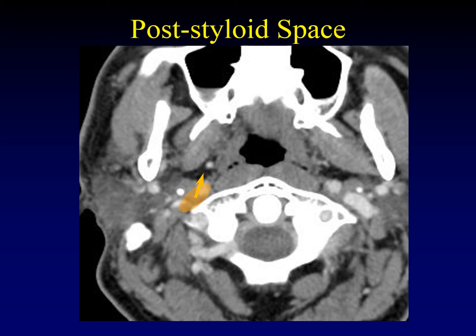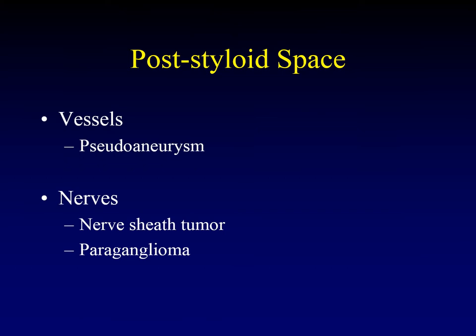Let's move on and talk about the post-styloid parapharyngeal space. Masses that arise here should displace the parapharyngeal fat anteriorly and a little bit medially. Some people prefer to call this the carotid space; I like the more descriptive term post-styloid space because it tells me where to look for it. Our differential includes things that arise from vessels such as pseudoaneurysms, and things that arise from nerves such as nerve sheath tumors or paragangliomas. A future webinar will cover this space in full detail.